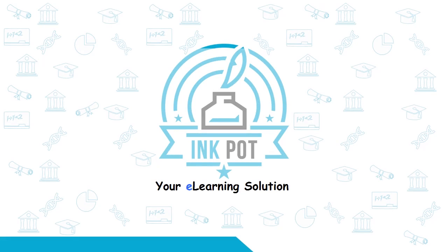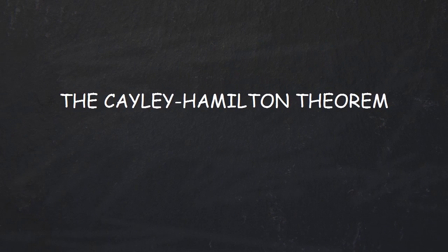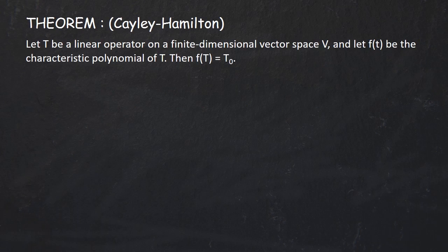In this video we shall study the Cayley-Hamilton theorem. This is a very well known result which says that any linear operator satisfies its characteristic equation. The theorem states that if T is a linear operator on a finite dimensional vector space V and f(T) is the characteristic polynomial of T, then f(T) equals the zero operator T₀.